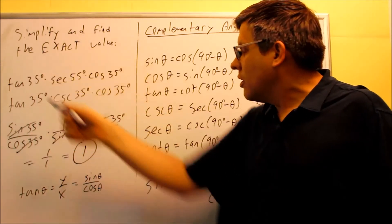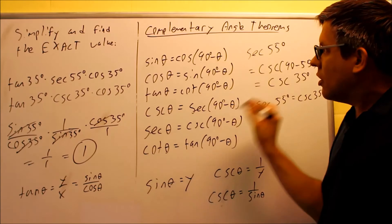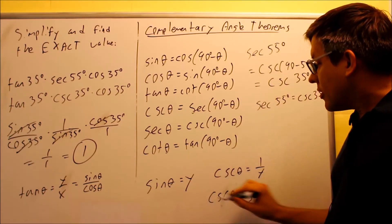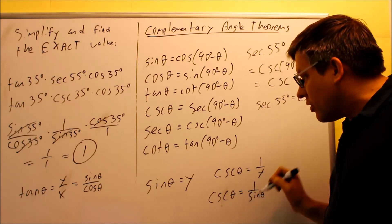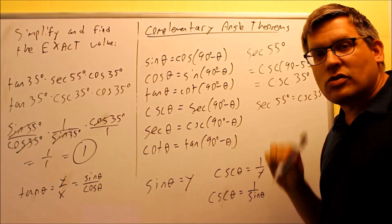So, that means that this whole entire thing, that all simplifies down into 1. So, we used a combination of complementary angle theorem. We also used our definitions for sine and cosine to manipulate them to equal an expression that would allow us to simplify this down more.